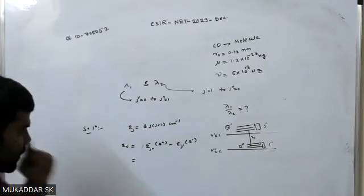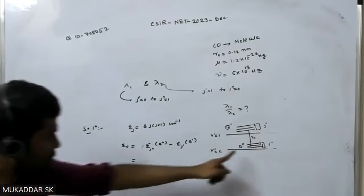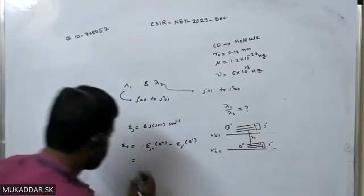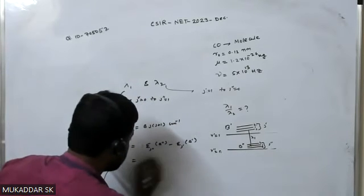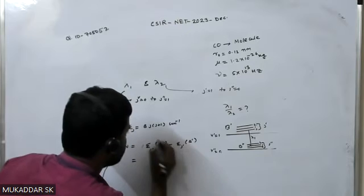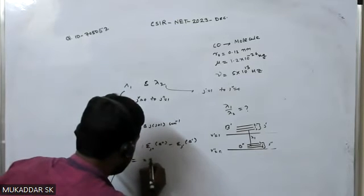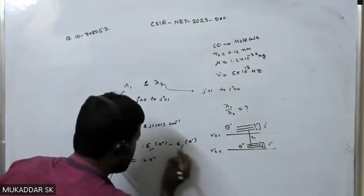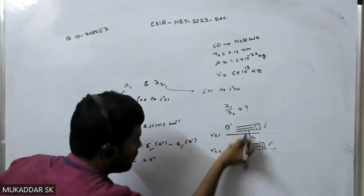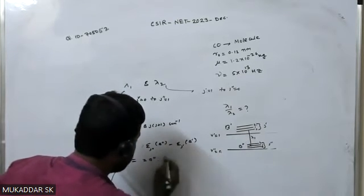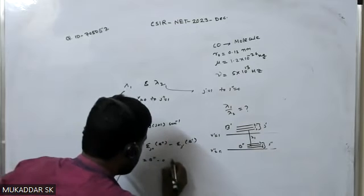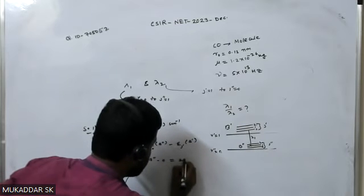Here j'' is 1, so that term gives 2B''. And j' is 0, so minus 0. So the wavenumber is simply 2B'', which means 1/λ1 = 2B''.